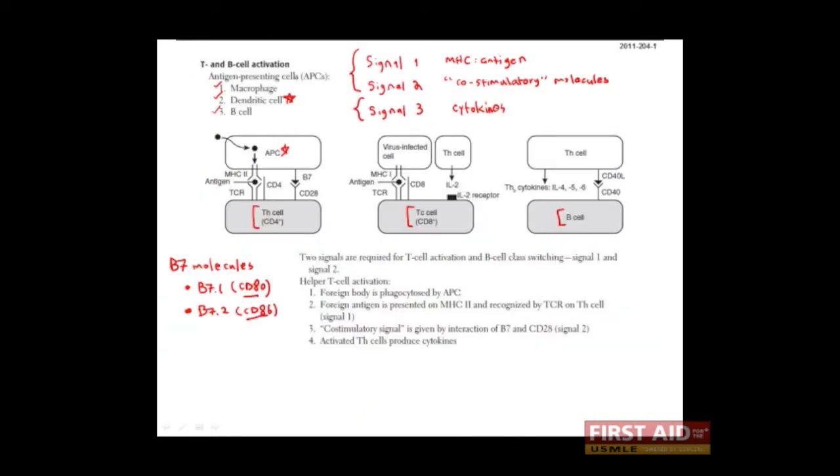Once the pathogen is taken up by the dendritic cell, it's going to be killed and digested by microbiocidal enzymes that the dendritic cell produces. The small peptides and other fragments from the pathogen are then going to be loaded onto MHC molecules. Here we have it drawn as MHC class II molecules. So here we have signal one. Here's antigen being presented by an MHC class II molecule.